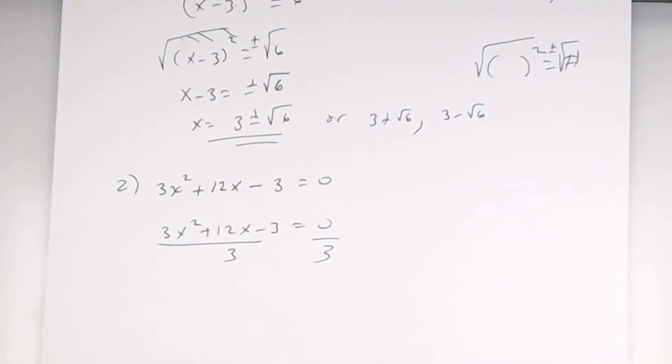So, if you need to, then do the next step. But, many of you can go from here to just saying, when I divide each term by 3, that's going to be x squared plus what? 4x. And then what? Minus 1.